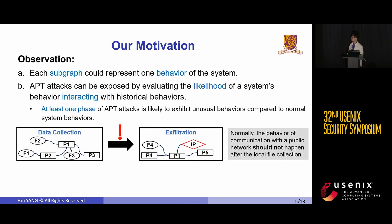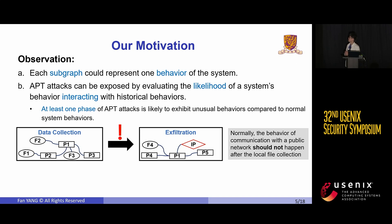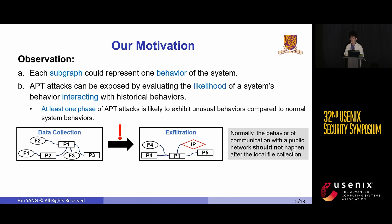In this work, we address these limitations. Our solution is based on two key observations. Firstly, each subgraph within a provenance graph could represent a system behavior. Secondly, APT attacks can be exposed by evaluating the likelihood of a system's behavior interacting with historical behaviors. Because, as demonstrated in the earlier slides, at least one phase of an APT attack chain is likely to exhibit unusual behavior compared to normal system behaviors.